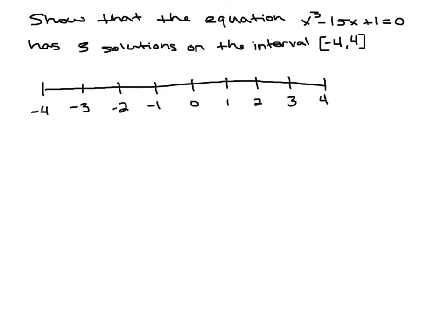If you cross the x-axis, your function value is going to go from negative values — all these values down here are all negative — and eventually, once they cross the x-axis, they're going to turn positive. So the way to go about doing this is to evaluate these numbers on this interval and see if they go from negative to positive or positive to negative. If that happens, that means they cross the x-axis and we have a solution in that interval.